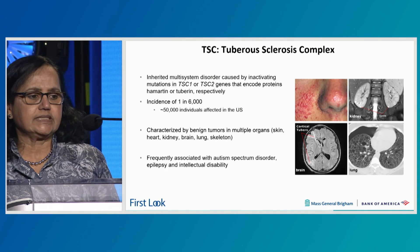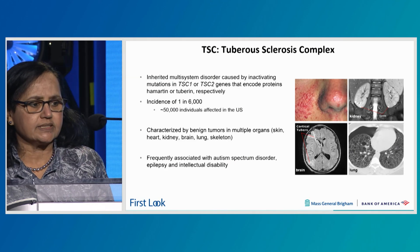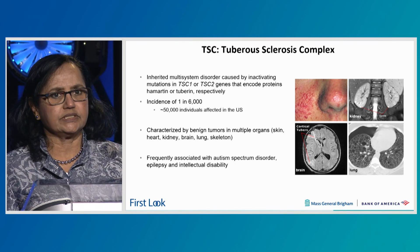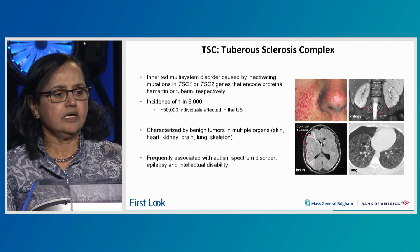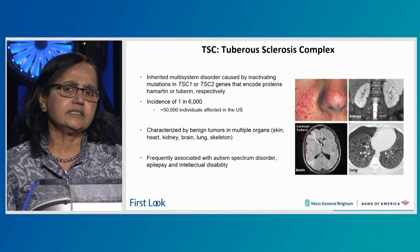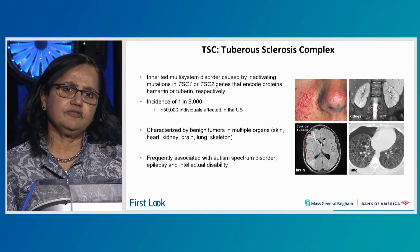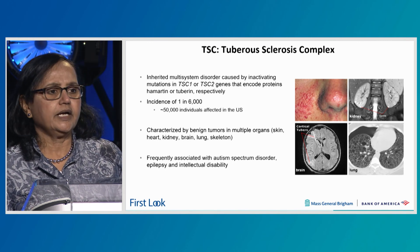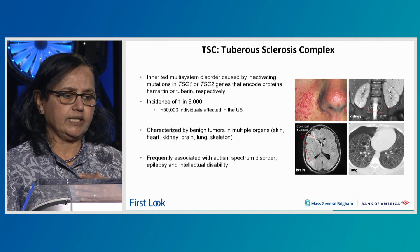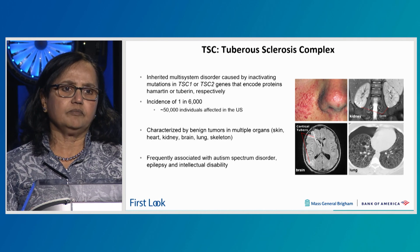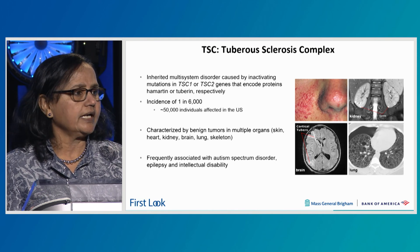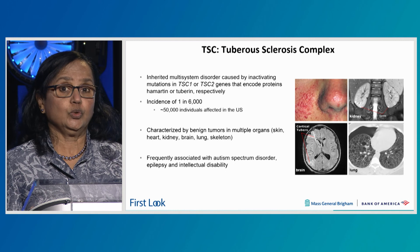So what is TSC? It's tuberous sclerosis complex — an inherited multi-system disease caused by inactivating mutations in either the TSC1 or TSC2 gene, which encode the proteins known as Hamartin or Tuberin, respectively. The incidence is 1 in 6,000, with approximately 50,000 cases affected in the U.S. It's characterized by benign tumors in multiple organs: skin — you can see the skin lesion on your right — kidney, cysts, lung nodules known as LAM or lymphangioleiomyomatosis, and brain characterized by cortical tubers. So it's truly a multi-system disease.